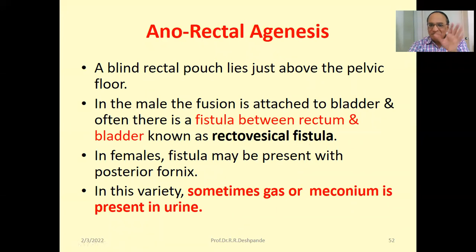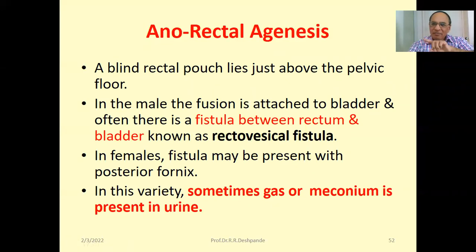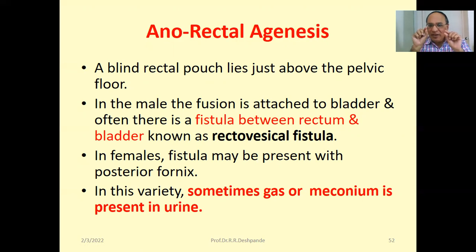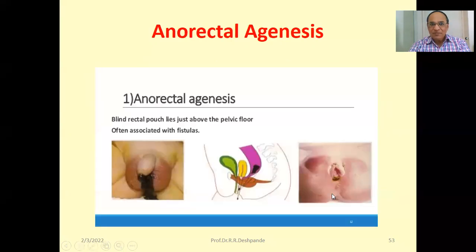Anorectal agenesis: a blind rectal pouch, like a bag, lies just above the pelvic floor. In the male, the blind pouch is attached to the urinary bladder and often there is a fistula — a hollow connection — between the rectum and the bladder, called a rectovesical fistula. In females, a fistula may be present with the posterior fornix. Sometimes gas or meconium is present in the urine. This is rare but possible. Anorectal agenesis is often associated with fistula.